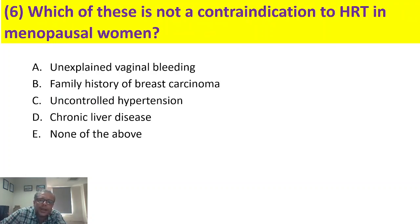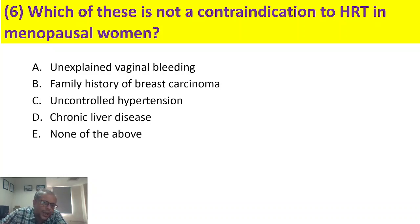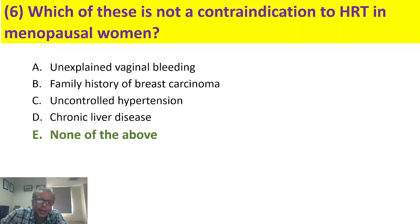Which of the following is not a contraindication to hormone replacement therapy in post-menopausal women? The options are unexplained vaginal bleeding, family history of breast carcinoma, uncontrolled hypertension, chronic liver disease, and none of the above. All of these options — unexplained vaginal bleeding, history of breast carcinoma, uncontrolled hypertension, and liver disease — are contraindications. Because of this double negative in the question, none of the above is the correct option.